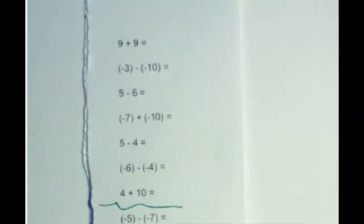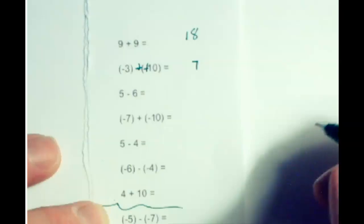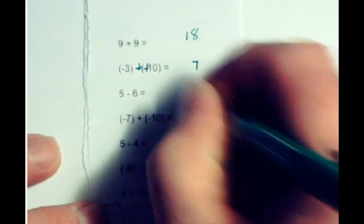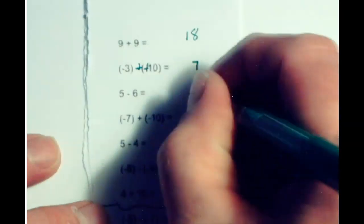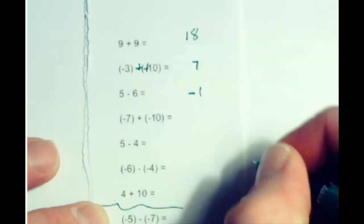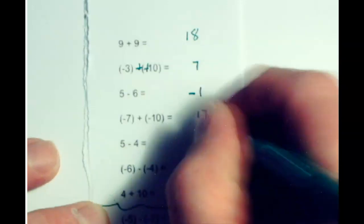Okay, these are the same signs — add them up, they're 18. This is a double shot, so now you have different signs — the difference is 7 and it's positive. These are different signs — the difference is 1 and it's negative. These are the same signs — this is 17 and it's negative.